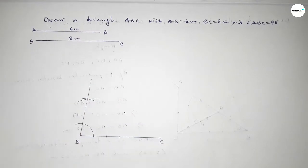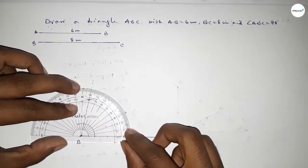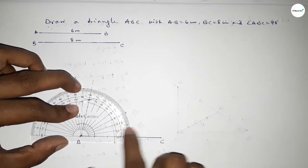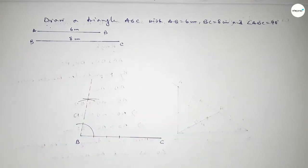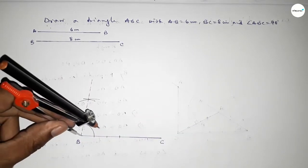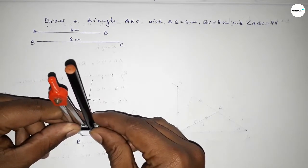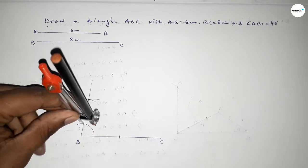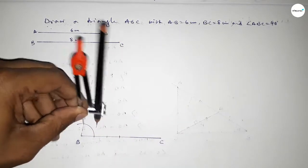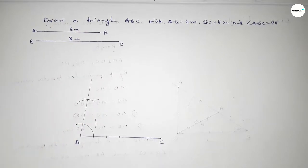Then we have to bisect this angle to get 40 degrees. Checking — this is 80 degrees perfectly. Now to bisect this angle, taking the same length and putting the compass here and drawing an arc.